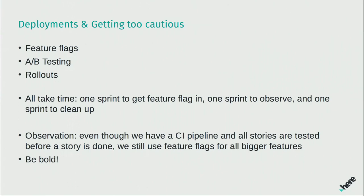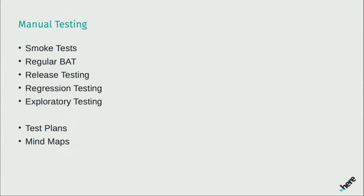A trend I'm observing now is that since we did these rollouts, people got more and more cautious — they're using more and more feature flags, hiding even smaller features behind them, even though once a story is finished we have all the QA tasks in place and all the testing done. Our quality should be solid. So the question is: are we not trusting our QA process anymore? That's why I say we have a company mission statement that says 'be bold' — we really need to think about being bolder again.